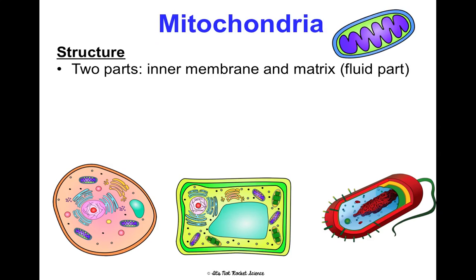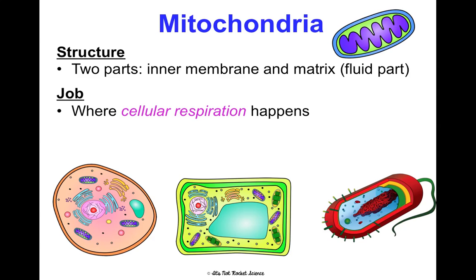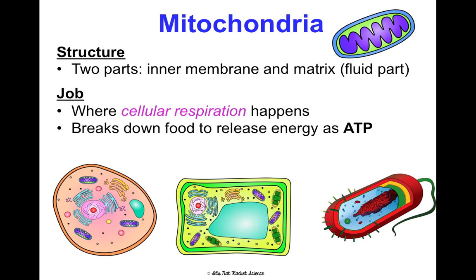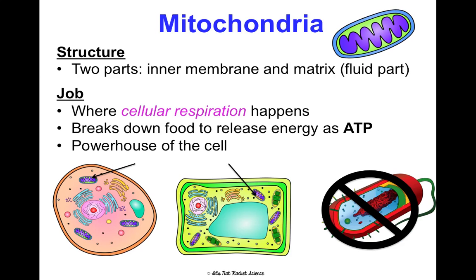Mitochondria have two parts: an inner membrane, which is the squiggly part, and a matrix, which is like the fluid cytoplasm of the mitochondria. Their job is where cellular respiration happens — the process that breaks down food to release energy in the form of ATP. We'll spend a whole concept on this later. Known as the powerhouse of the cell, there will be multiple mitochondria in a cell. They're in plant cells too, but not in bacteria cells.